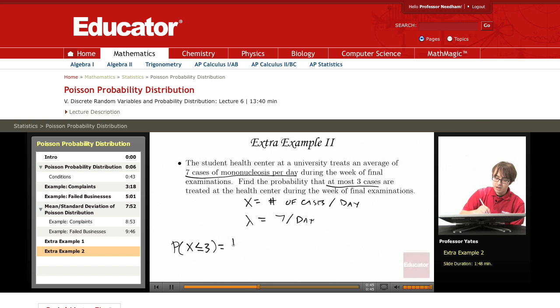So this is the probability that X equals zero, or X equals one, or X equals two, or X equals three.